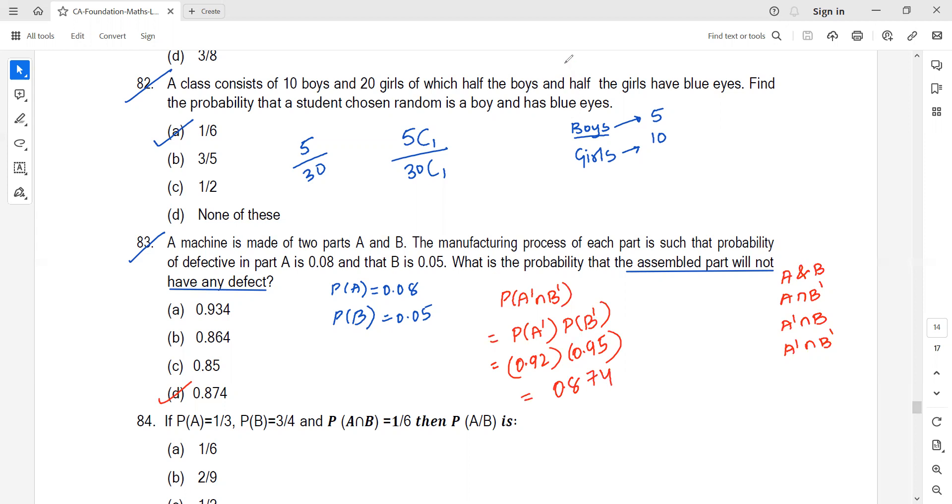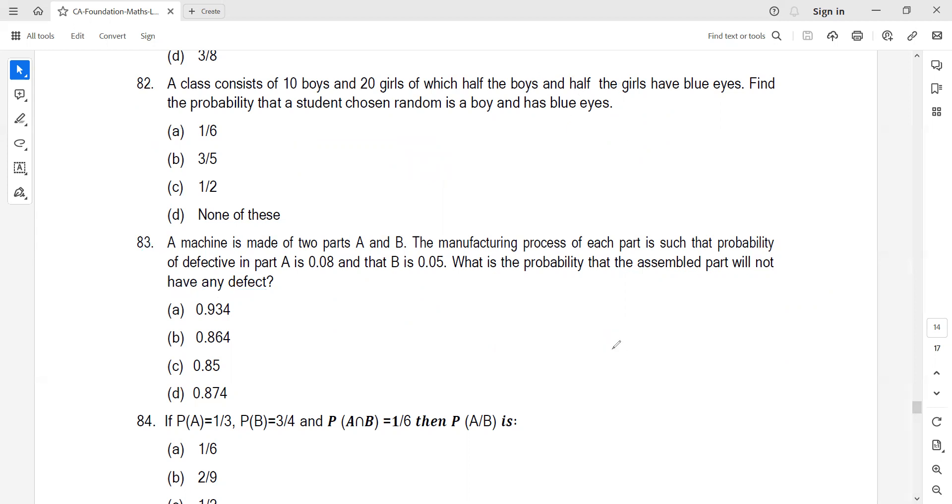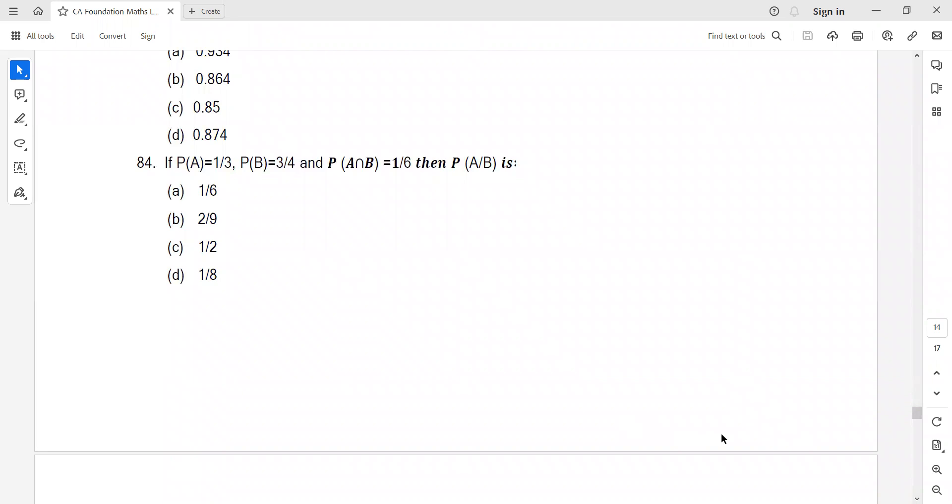Question 84: Direct straightforward formula, P of A given B is P of A intersection B upon P of B. A intersection B is 1 by 6, P of B is 3 by 4. This becomes 1 by 6 into 4 by 3, which is 2 by 9. Answer is B.